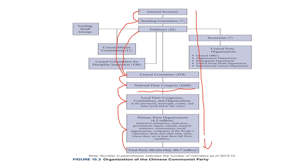The National Party Congress is elected by the local party congresses from among their own members. They meet only once every five years for one week. We can see that the National Party Congress has no real power — it is only a symbolic body with no substantive power.